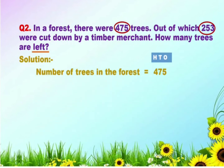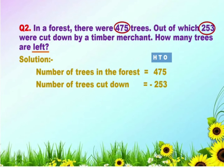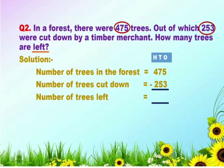Now we have to form a statement. In the first line we will write: number of trees in the forest is equal to 475. In the second line we will write: number of trees cut down is equal to 253. In the next line we will write: number of trees left. We have to subtract 253 from 475. Starting from the right, subtract digits at ones place: 5 minus 3 is equal to 2. Then subtract digits at tens place: 7 minus 5 is equal to 2.